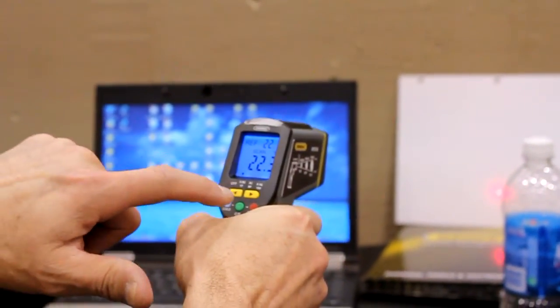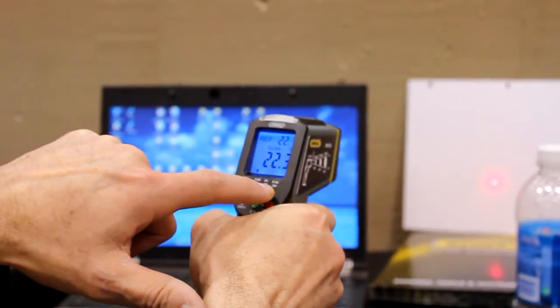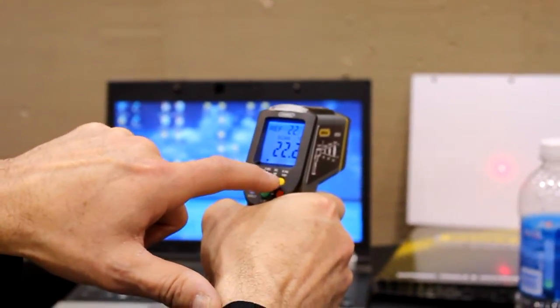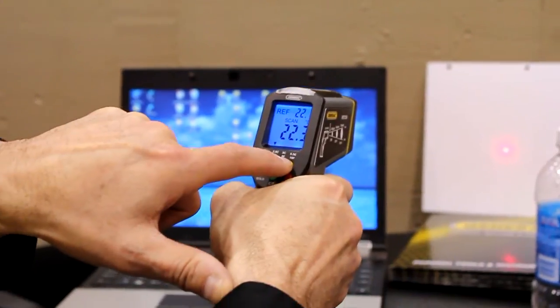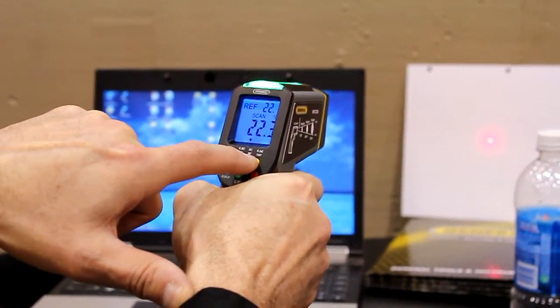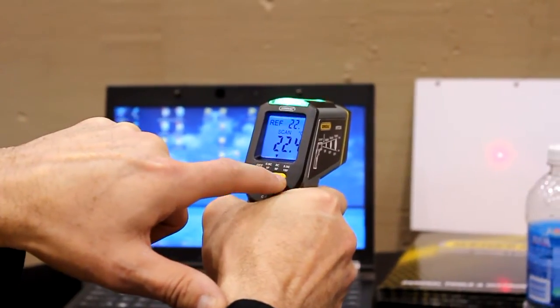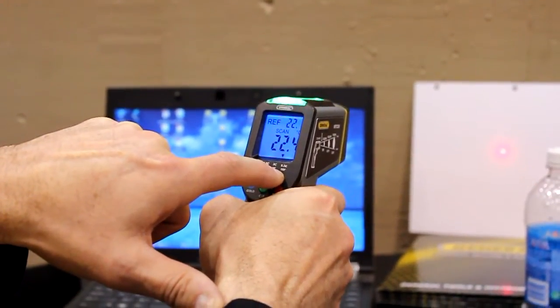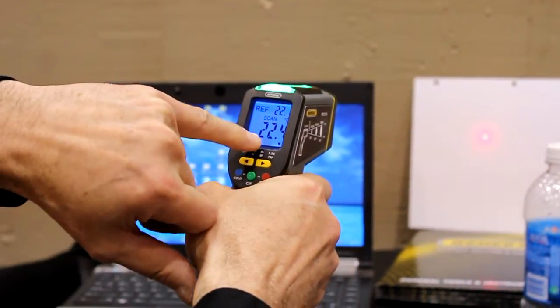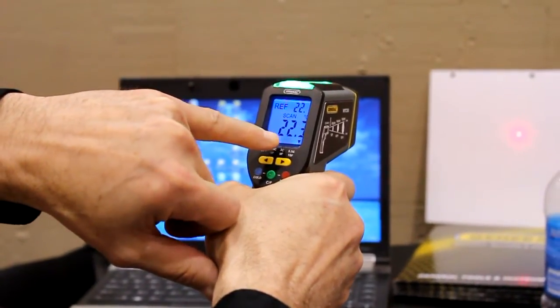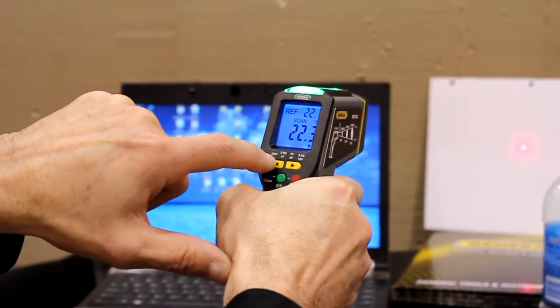As you scan, in order to scan you have to set your temperature reference point, your temperature scan point. And by pressing this button you move that point to 0.5 degree, 3 degree or 5.5 degree Celsius. I'm going to move it back to 3 degree.